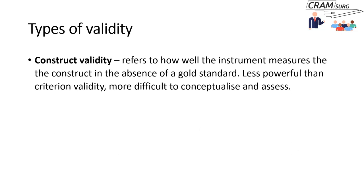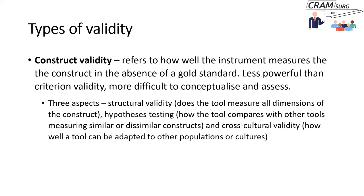The third type of validity is construct validity, useful in settings where there is no gold standard. Construct validity refers to how well the instrument measures the construct in the absence of a gold standard. This is less powerful than criterion validity and more difficult to conceptualize and assess. I don't have personal experience testing for construct validity, so I won't spend too much time on this.